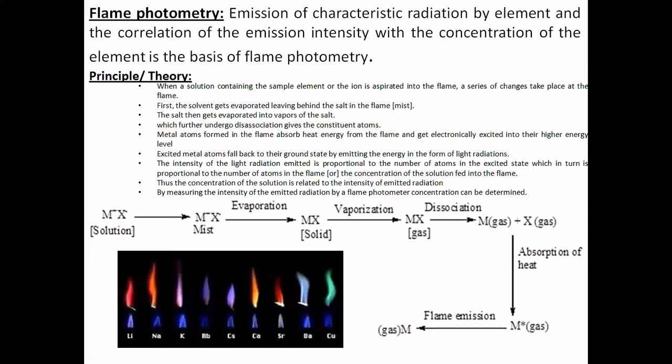Alkali and alkaline earth metals have low excitation energies, so flame photometry is applicable for elements that are easily excited and do not require very high temperatures. We use a flame for excitation of these elements, which does not reach very high temperatures. Let us now look into the principle of flame photometry.